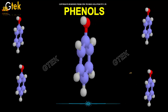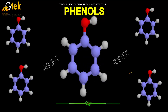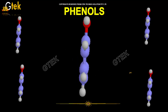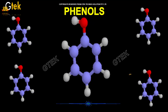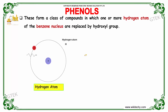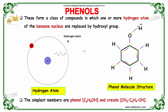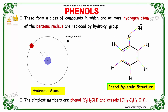Welcome to GTEC Technos Solutions Private Limited. In this unit, we will be studying about Phenols. Phenols form a class of compounds in which one or more hydrogen atoms of the benzene nucleus are replaced by a hydroxyl group. The simplest members are Phenol, C6H5OH, and Cresols, CH3-C6H4OH.